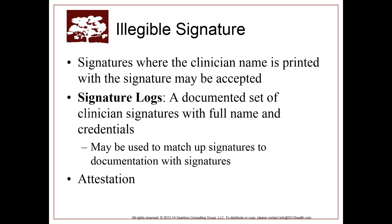Regarding legible signatures: every doctor I've worked with has probably the first letter somewhat decipherable and the rest you can't read. Because of that, there are two things you can do. One is to put the name of the physician underneath the signature so you can identify who signed. Or you can use a signature log — a documented set of all clinician signatures with their full name and credentials — and then use that to match it back. Personally, I think on all documents, including Superbills, put the name of the practitioner at the bottom with date information.